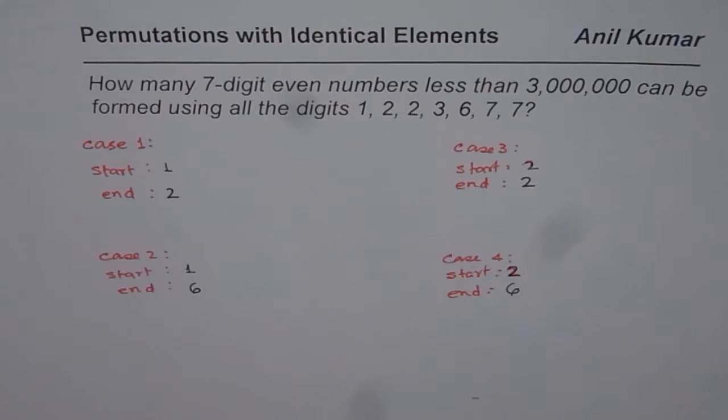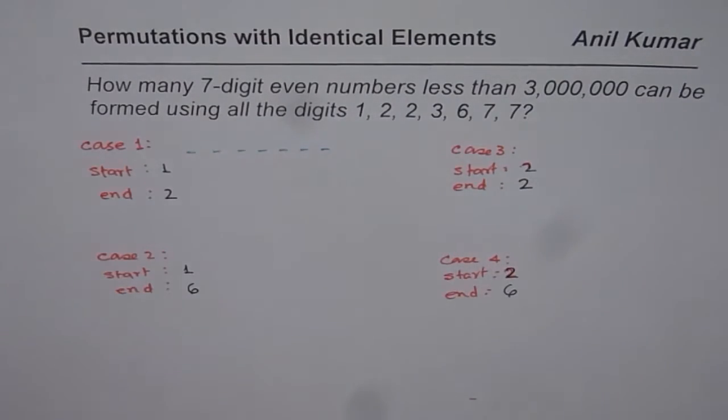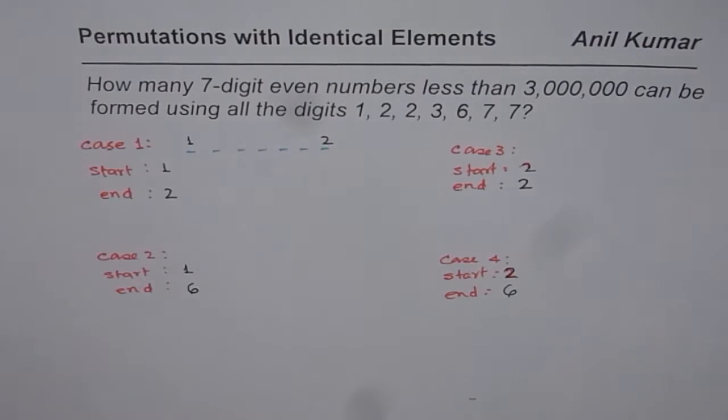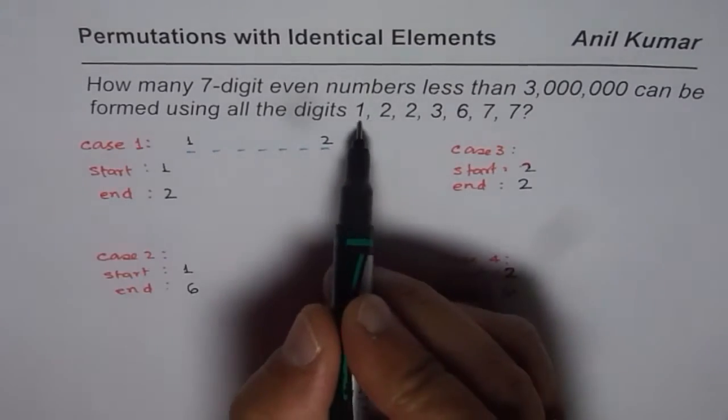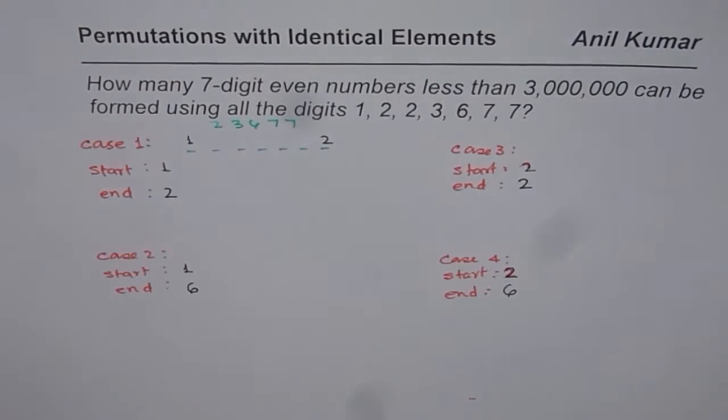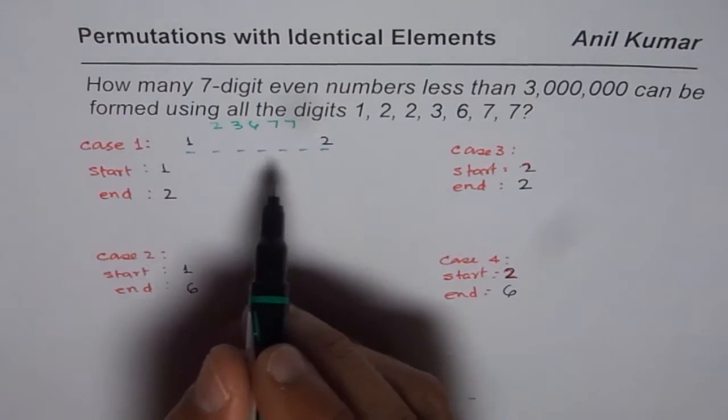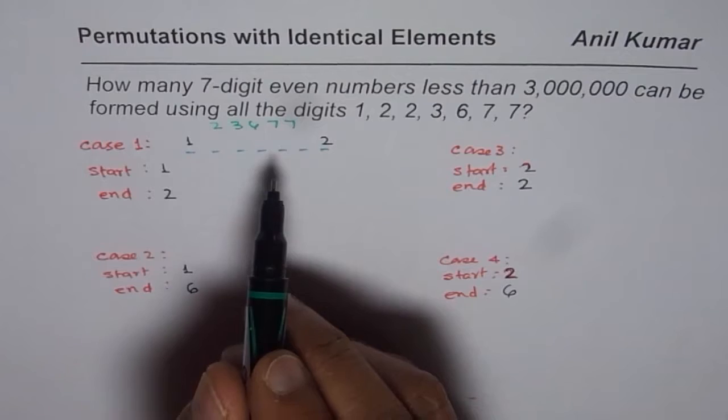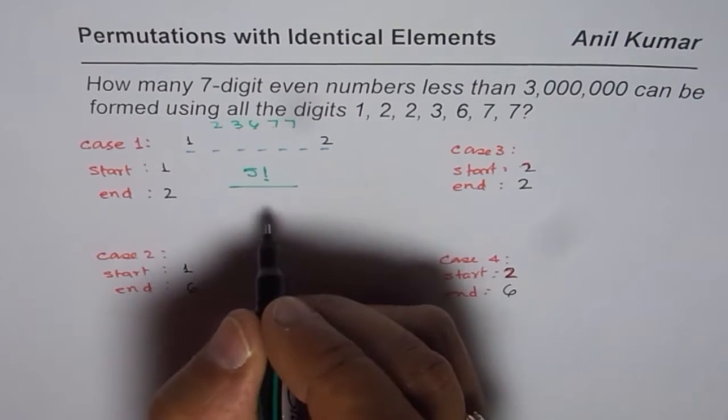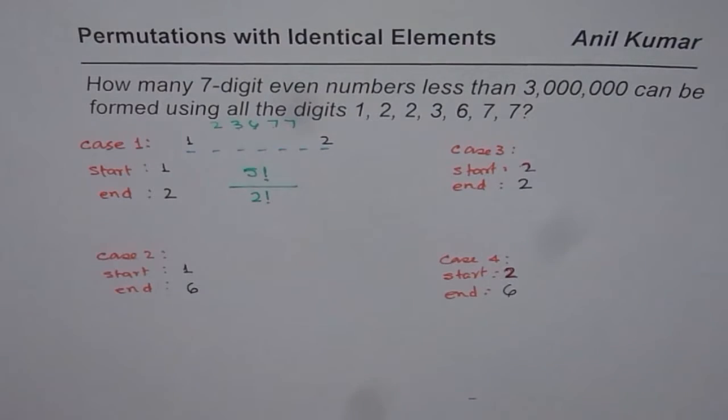Now case 1. So you have 7 numbers: 1, 2, 3, 4, 5, 6, 7 in which we have fixed the starting number as 1 and the other number as 2. So once we have taken away these numbers from the list, then what are we left with? We are left with 2, 3, 6, 7, 7. These are 5 numbers out of which 1 of them repeats. There are 2 sevens. Therefore, total number of combinations which can be made with this list will be 5 factorial divided by 2 factorial.